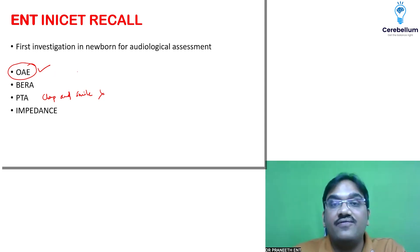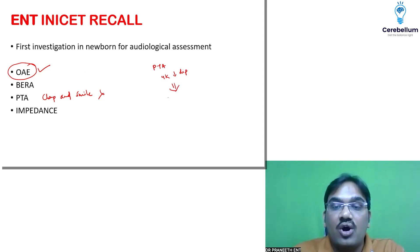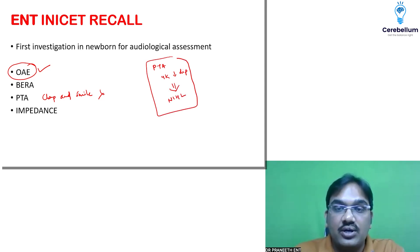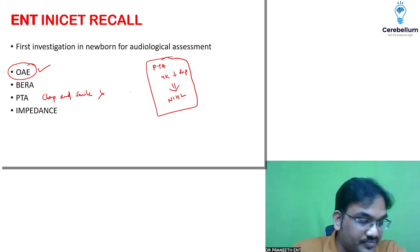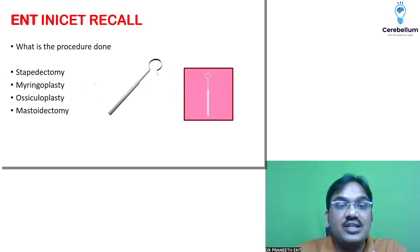If a PTA audiogram shows a 4 kHz dip, that should be noise-induced hearing loss. A 4 kHz dip on audiogram indicates noise-induced hearing loss.